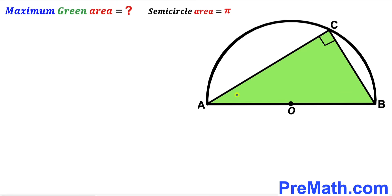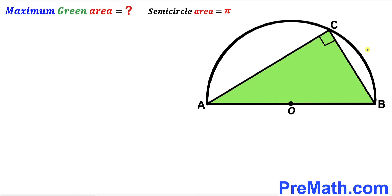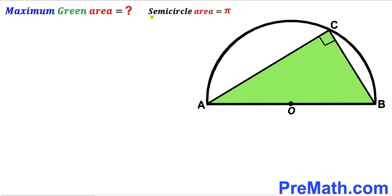Welcome to PreMath. In this video we have a green shaded right triangle ABC fully inscribed in a semicircle with center O, such that AB is the diameter of this semicircle. The area of this semicircle has been given to us as pi square units, and our task is to calculate the maximum area of this green shaded triangle ABC.